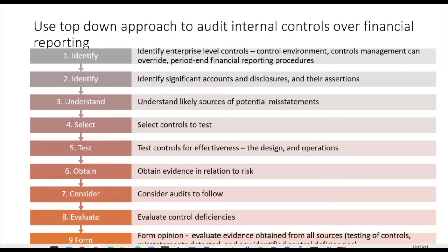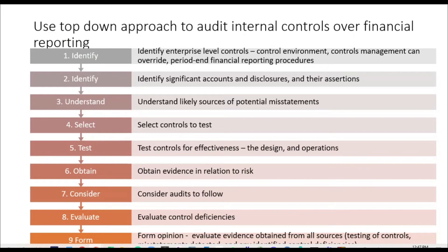The auditor uses a top-down approach to audit internal controls of financial reporting. First, it is to identify enterprise-level controls, looking at the control environment and management controls. Management can override certain controls, therefore those should be revisited. Then examine the procedures adopted by the enterprise for the period-end financial reporting.